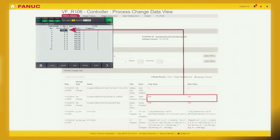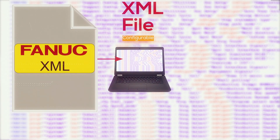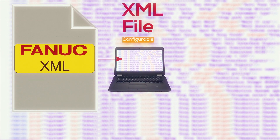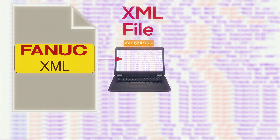Vision, IRPick tool, pallet tool, and more are also covered. An XML file is used to define the variables that are tracked by this Process Change feature.